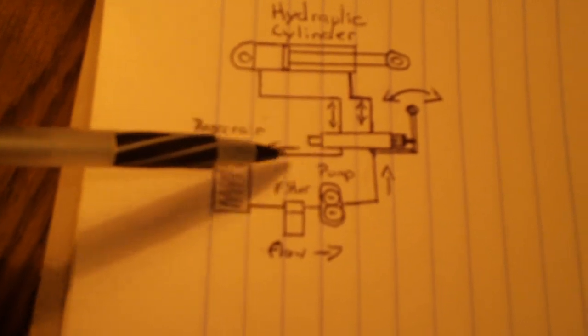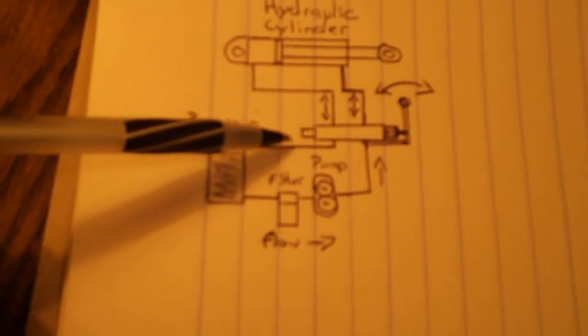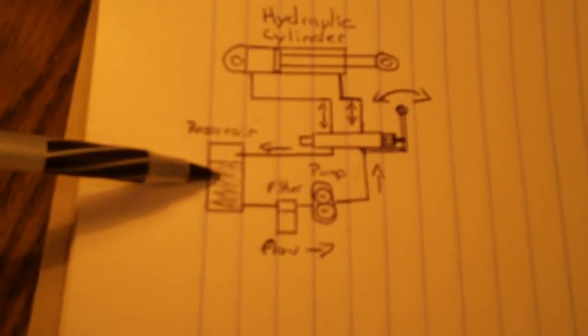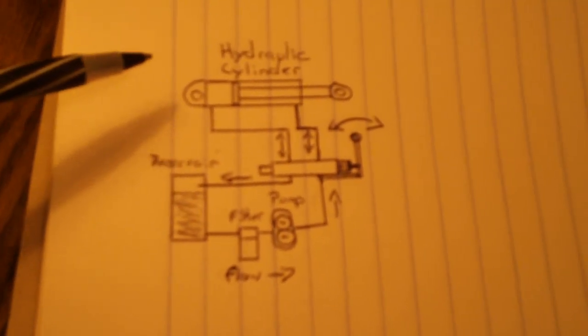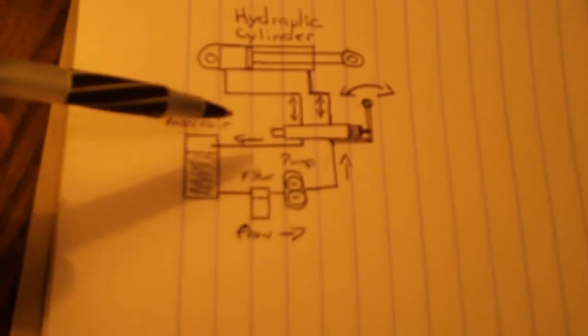Then you have this line here, which basically takes any additional pressure or additional fluid, and returns it to the hydraulic reservoir. And that is the basics of how a hydraulic system works.